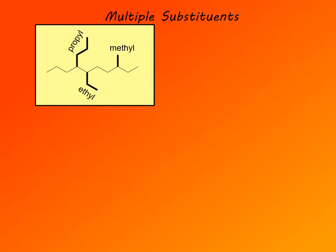Listing them alphabetically would be ethyl, methyl, propyl. Then we look at the chain — it has ten carbons — so the name would be ethyl-methyl-propyl-decane. Of course, numbers have to be associated with ethyl, methyl, and propyl.